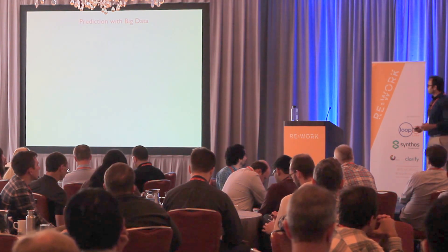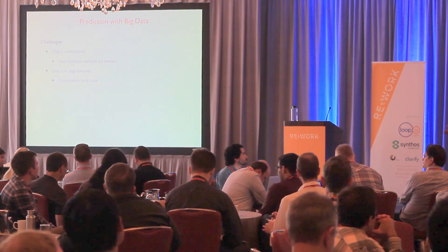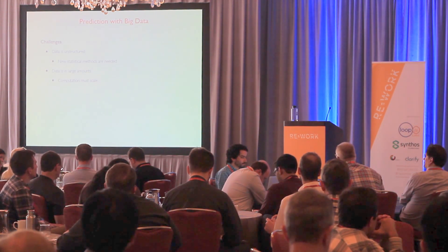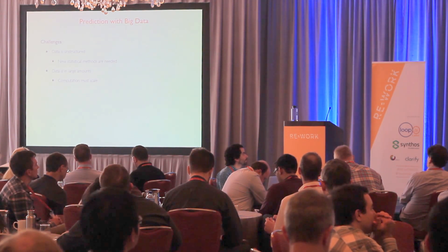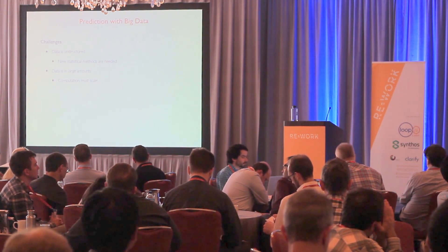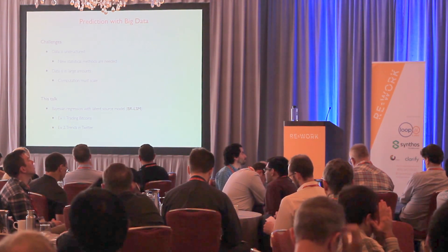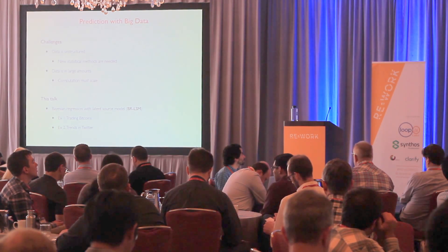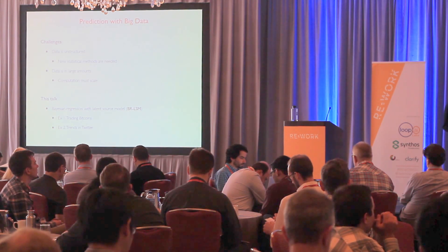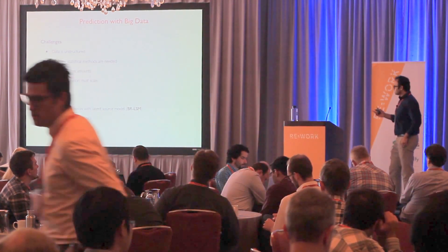This doesn't sound easy, because there are two basic challenges. First, data is usually unstructured — a classical statistician might build a regression model, a neural net person might train neural nets, but that requires a lot of art. Can we bypass that art? Second, there's a large amount of data, so whatever you do you don't want to spend too much compute. The method I'm going to describe is what one would call Bayesian regression, with the twist that the underlying model is what we call a latent source model. I'll take you through two examples: trading bitcoins profitably, and predicting trends on Twitter.